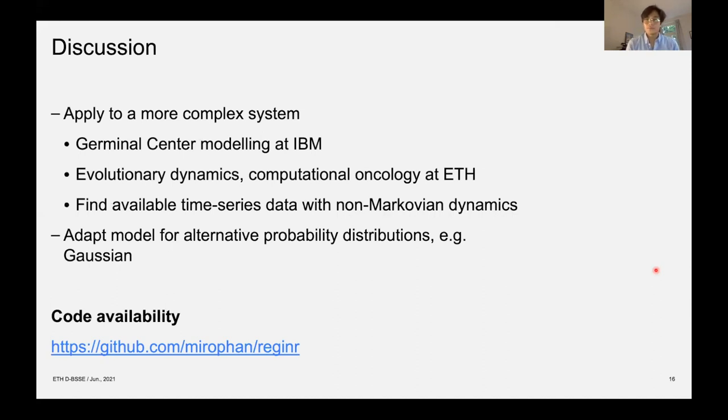And finally we're at the discussion point. So we've shown that our developed framework works well and it performs better than the direct Gillespie. We validated it against a simple example data set and we've also shown that it's still computationally efficient. So the further step would be to apply our approach to a more complex system. For example we're hoping to leverage the expertise we have at IBM for germinal center modeling. Furthermore we can also model evolutionary dynamics using the computational oncology activities at the ETH lab at which I was working at.